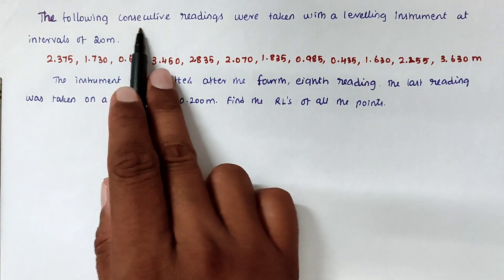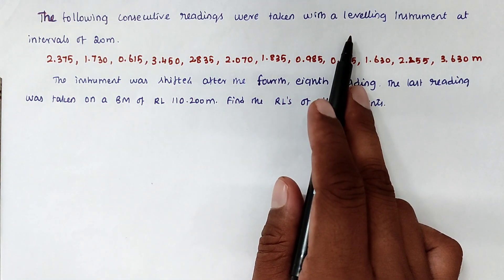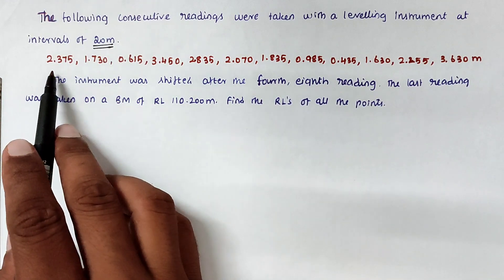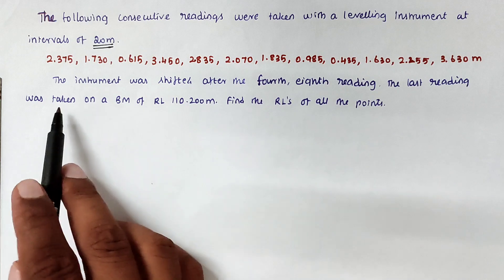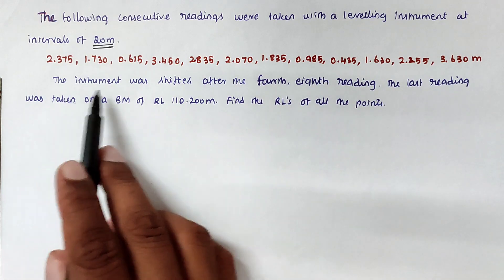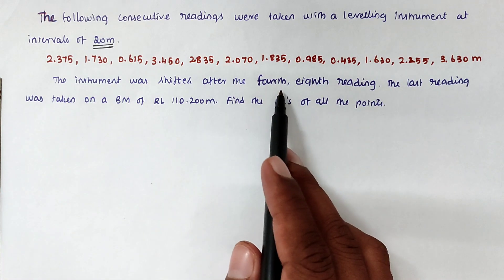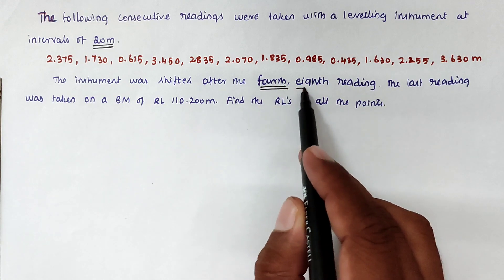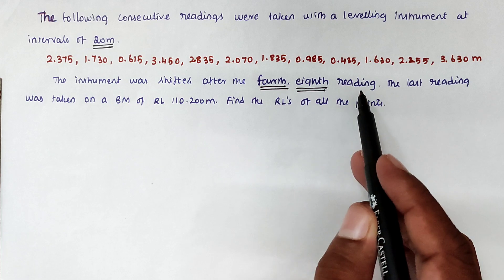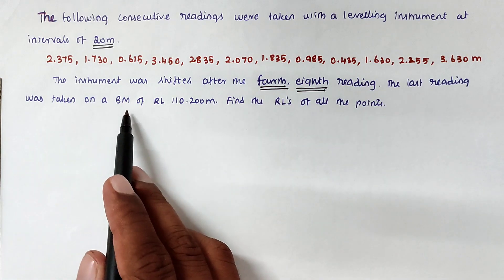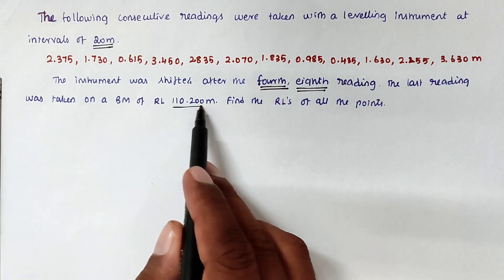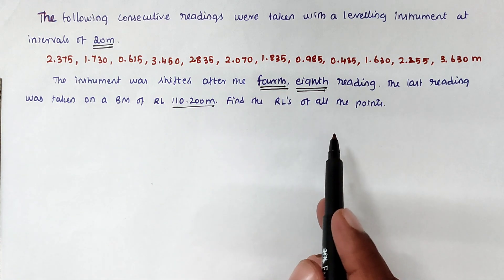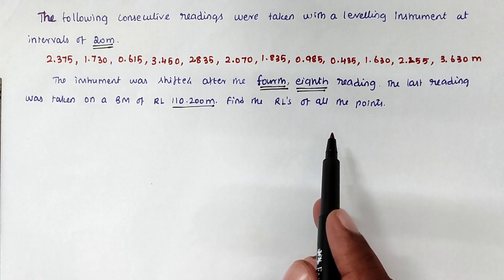The problem is: the following consecutive readings were taken with the leveling instrument at intervals of 20 meters. There are 10 readings given. The instrument was shifted after the fourth and eighth readings. The last reading was taken on the benchmark, so the reduced level (RL) is 110.200 meters. We have to find the RL of all the points.